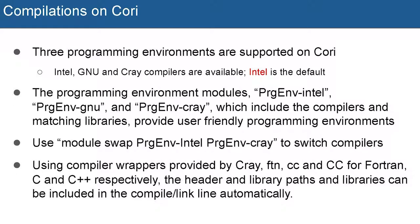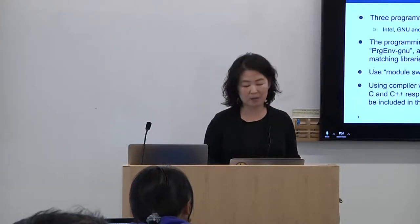By programming environment we mainly mean the compilers and the libraries that are built with matching compilers. Cray did a lot of work to pack these things together and provide user-friendly programming environments. They provide so-called compiler wrappers — FTN, CC, and CC (capital) — for Fortran, C, and C++ compilers respectively. The compiler wrappers interact with the modules loaded in your environment and take care of many things for compilation. If you use compiler wrappers, include paths and libraries can be taken care of automatically.